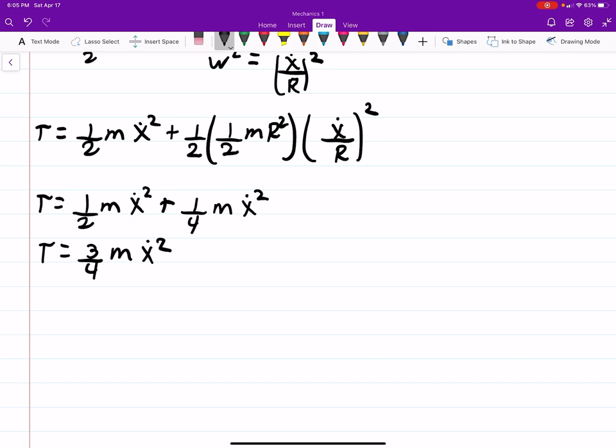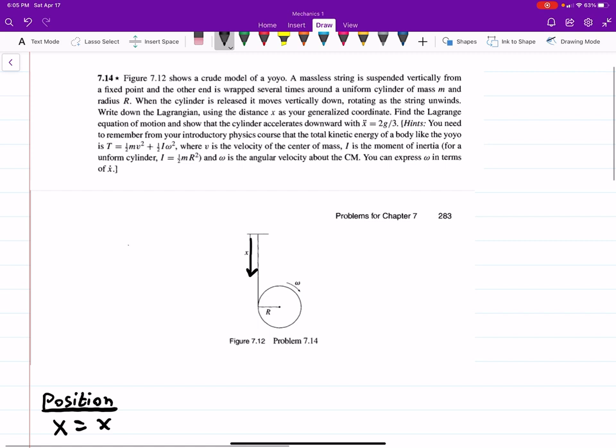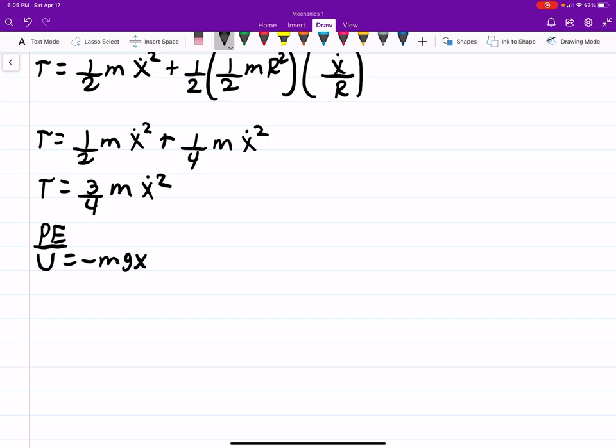And then the next thing we need is our potential energy, which is pretty easy. It's just minus mgx. So normally we say y, but x is up and down in this case. So x is just what we're going to use here, because that's just how we define our axis. And because down is positive, the fact that it's going down gives us the negative mg.